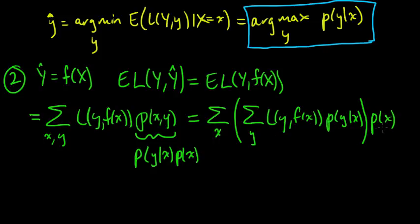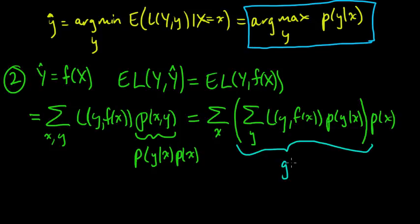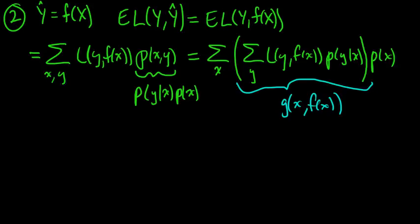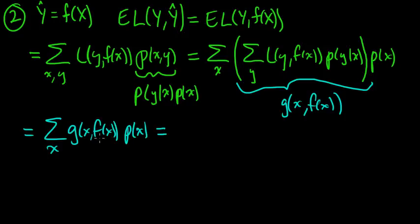We pulled out p(x), and the inner sum — summing over y — is a function of x only, not of y. Let's call that g(x, f(x)), where it takes x and f(x) as its two arguments. Then the whole expression can be written as the sum over x of g(x, f(x)) times p(x), which we recognize as an expected value with respect to the marginal distribution on x: E_x[g(x, f(x))].